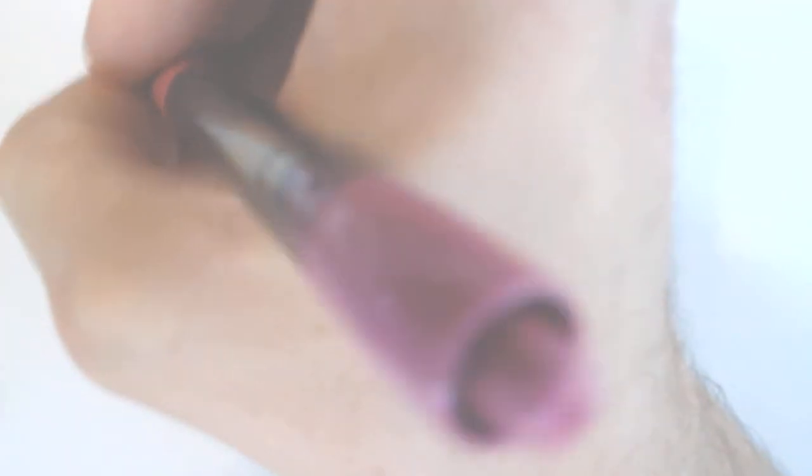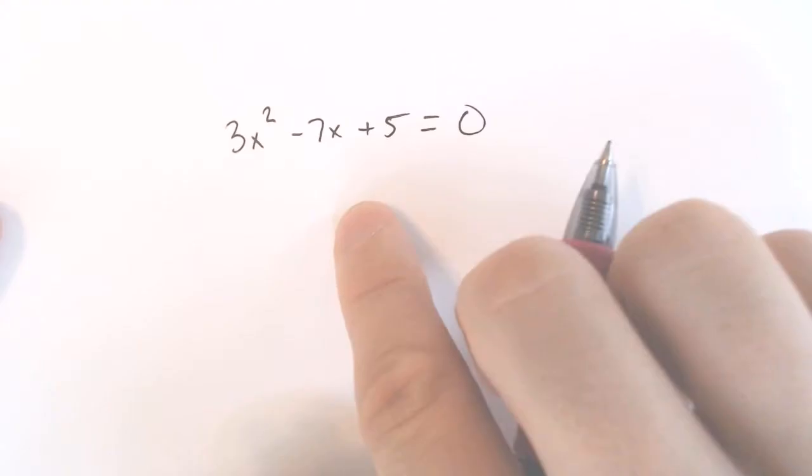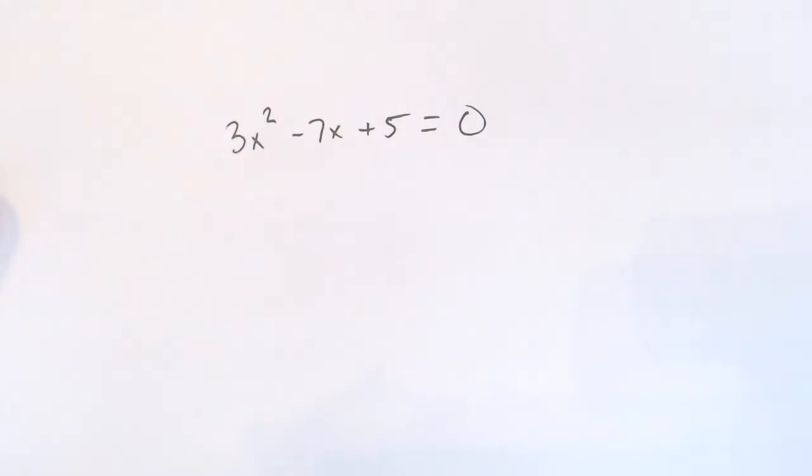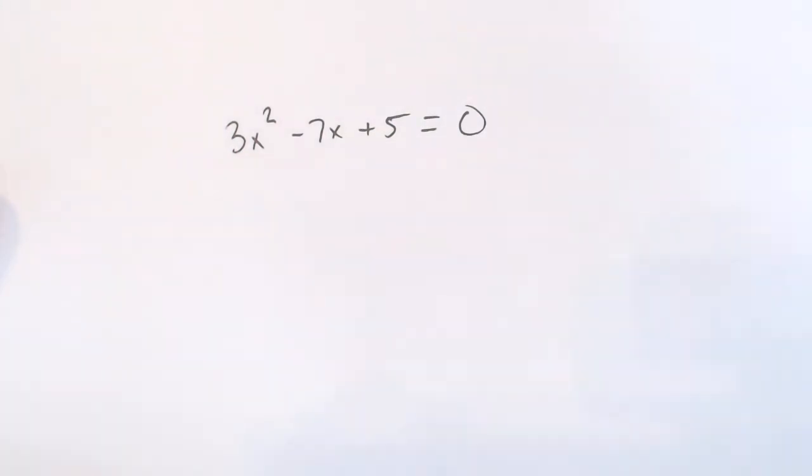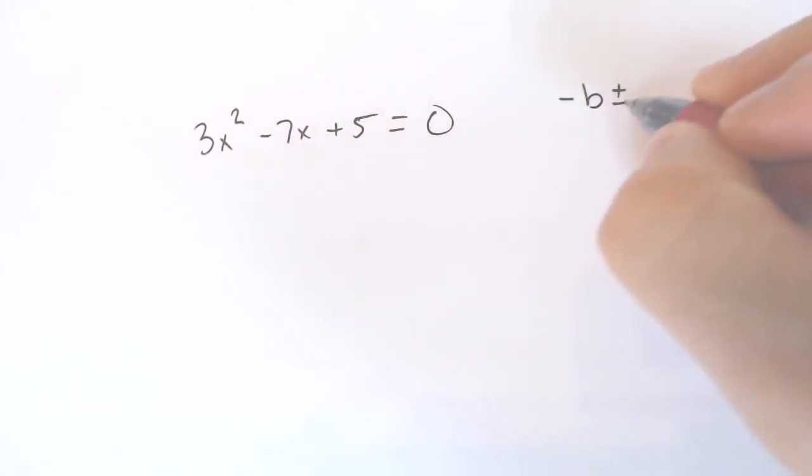So if you have a 3x² - 7x + 5 = 0, that is a mess of a problem, and you would not want to complete the square, and it does not factor. Nothing multiplies to 15 but adds to negative 7. So if that's the case, if all the numbers are ugly and you can't do anything else, there is a formula called the quadratic formula.